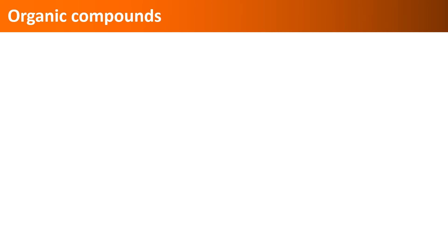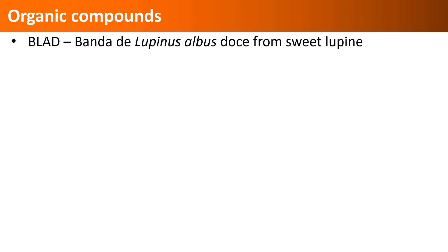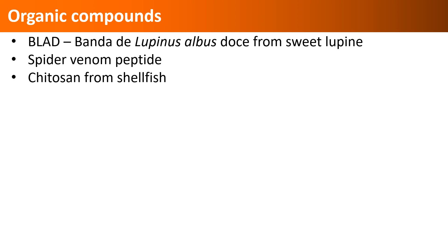Here are a few examples of products based on proteins or other organic compounds used as pesticides or biostimulants. BLAD is a polypeptide derived from sweet lupine seeds and used as a fungicide. A spider venom peptide-based active ingredient is new in the market and has its own IRAC mode of action group 32. Chitosan is a polysaccharide, and the one derived from shellfish is used as a fungicide and a biostimulant.